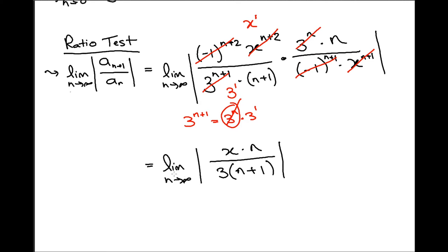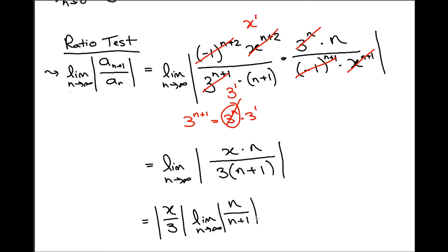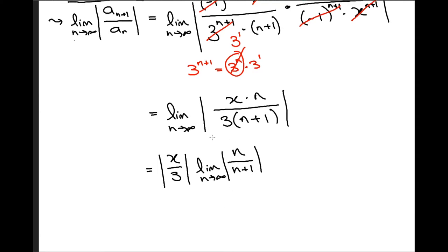Now the limit only concerns n, so we can bring the x and 3 out to the front. We can rewrite this as |x/3| times the limit as n goes to infinity of n/(n+1). We can evaluate this limit — it's an infinity/infinity form, so using L'Hôpital's rule or the Calc 1 method of dividing by highest power, you get that this limit simply goes to 1.